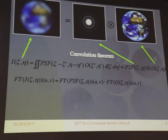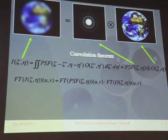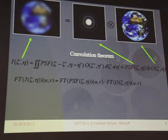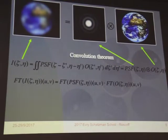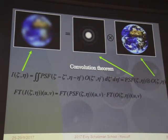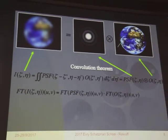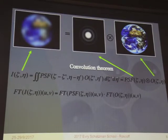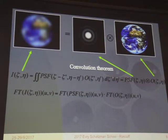If you take a Fourier transform of this intensity, the Fourier transform of a convolution product is simply a product of the Fourier transforms. You could then say: if I want to recover the source information, I could divide this quantity by the Fourier transform of the PSF and take the inverse Fourier transform. So that's what I'm going to do.